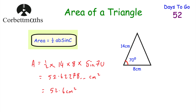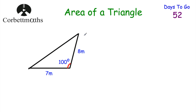Let's have a look at a question for you to try. We've got a triangle with the lengths of two sides — 7 metres and 8 metres — and the angle between them being 100 degrees. Can you find the area for that triangle? Feel free to pause the video and try it.